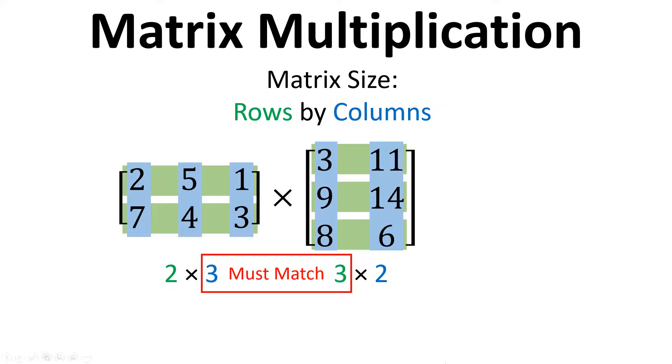Now it's important that the columns of the first one matches the rows of the second one, so these two numbers here must match. And then the two numbers on the outside, so the rows of the first matrix and the columns of the second matrix, that determines the size of the answer matrix. So in this case it's going to be a 2 by 2 for the answer matrix.